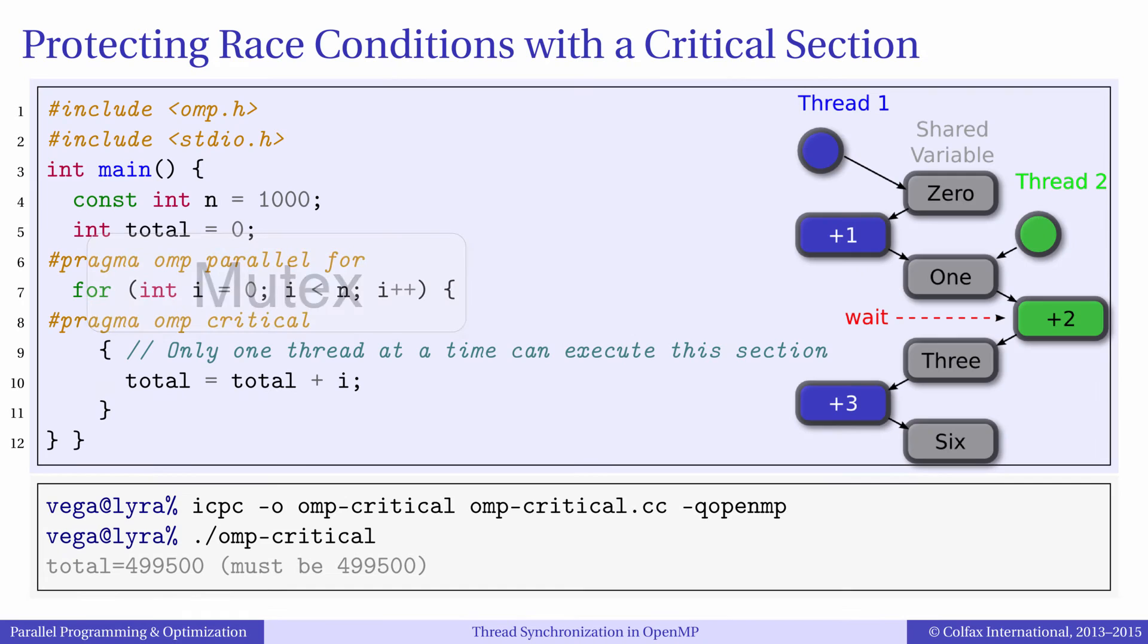There are two fundamental approaches to resolving race conditions: mutexes and parallel reduction. In this episode we will demonstrate mutexes.